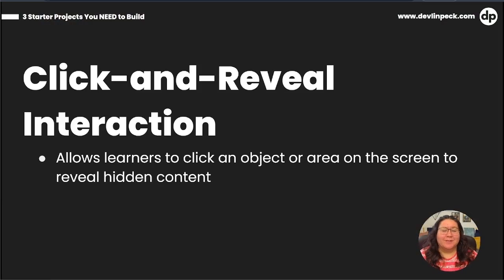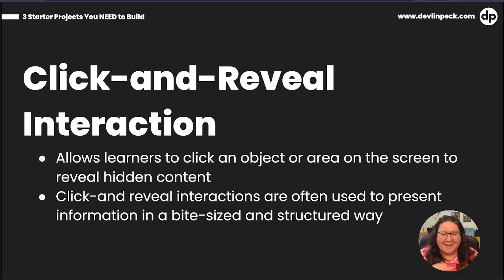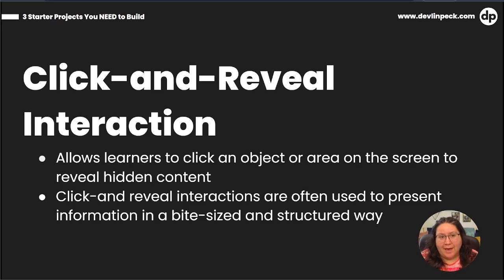Our third and final interaction is the click and reveal interaction, which is exactly what it sounds like. Learners can click on an object or an area on the screen to reveal hidden content. These interactions are often used to present information in a bite-sized and structured way. The clickable areas may be smaller, so the content in those spaces isn't going to be as heavy — you don't want to pack too much in. You can set it up so learners follow a path, or let them click anywhere in any order.